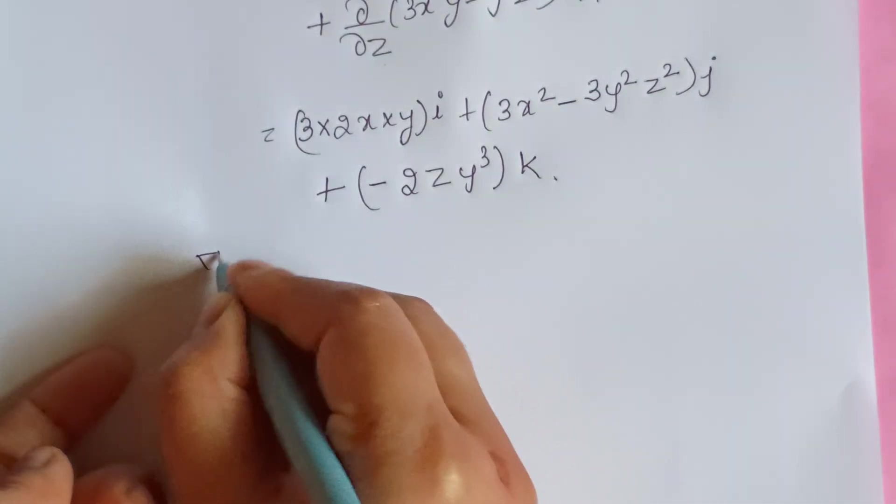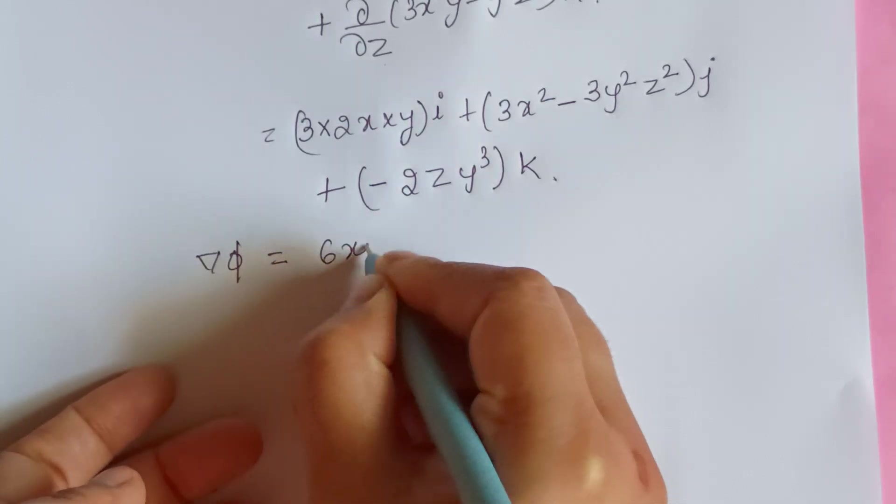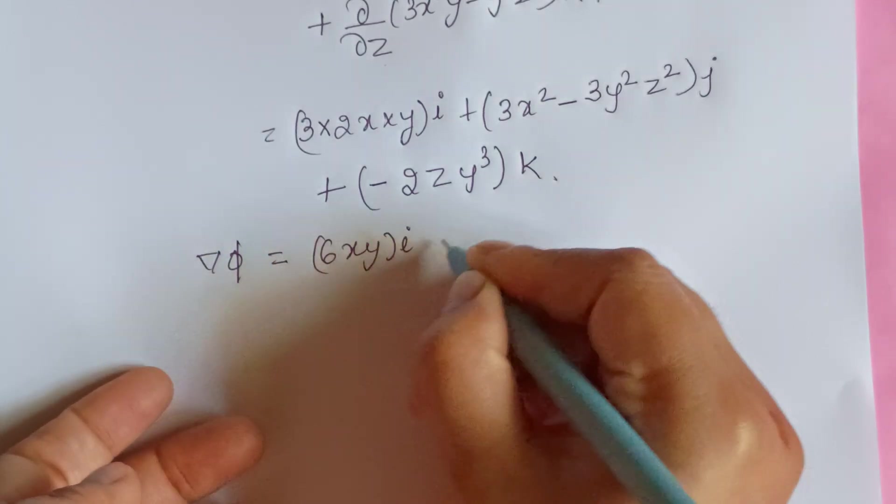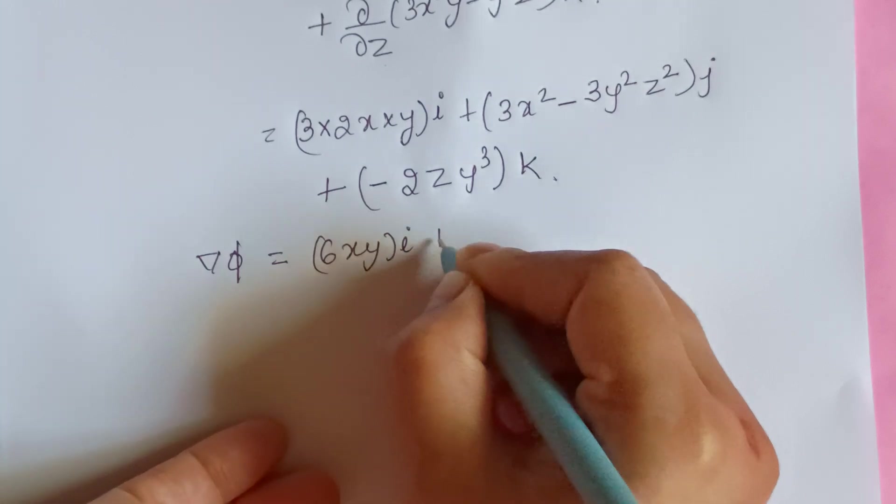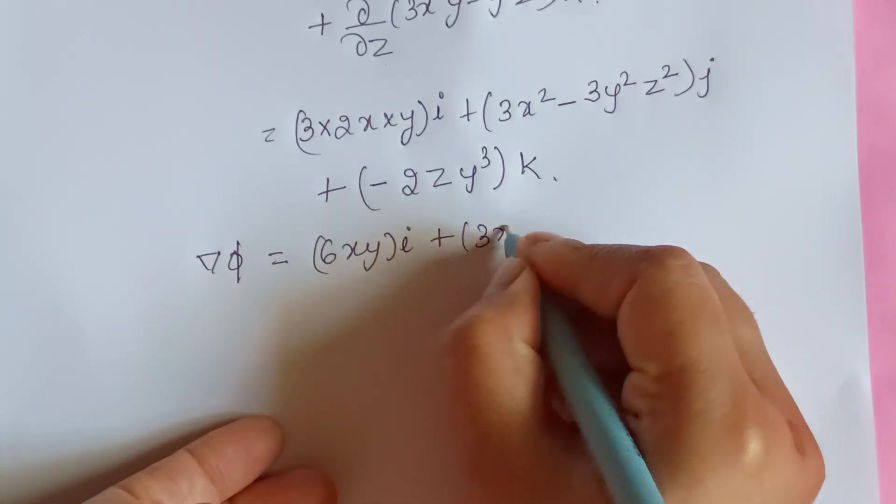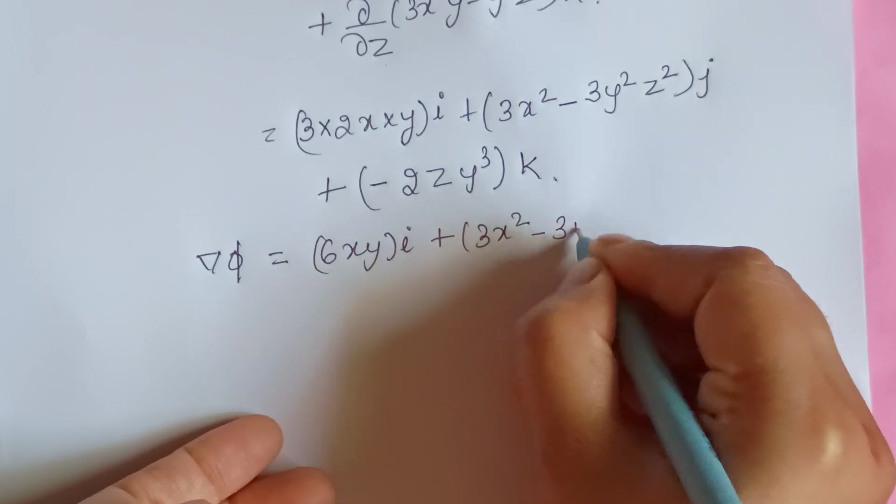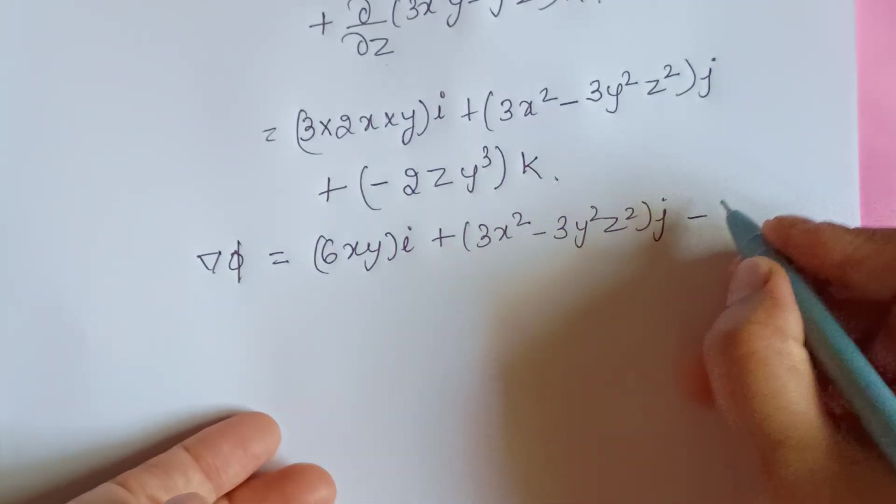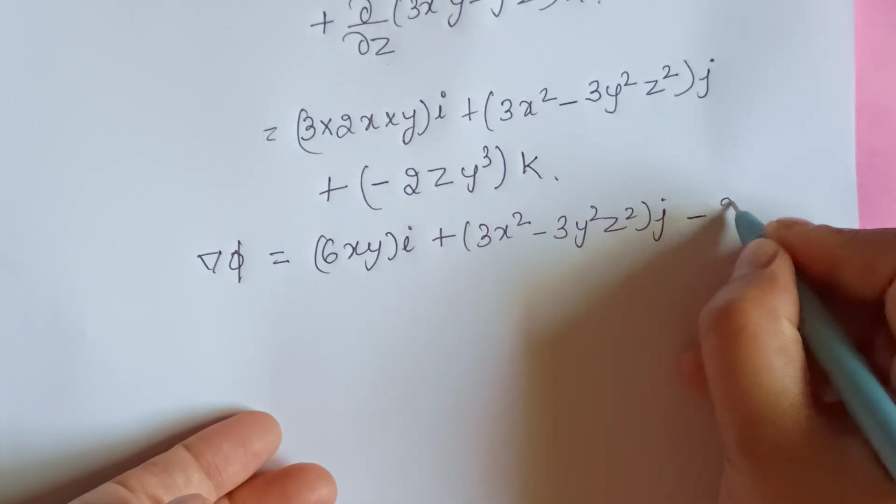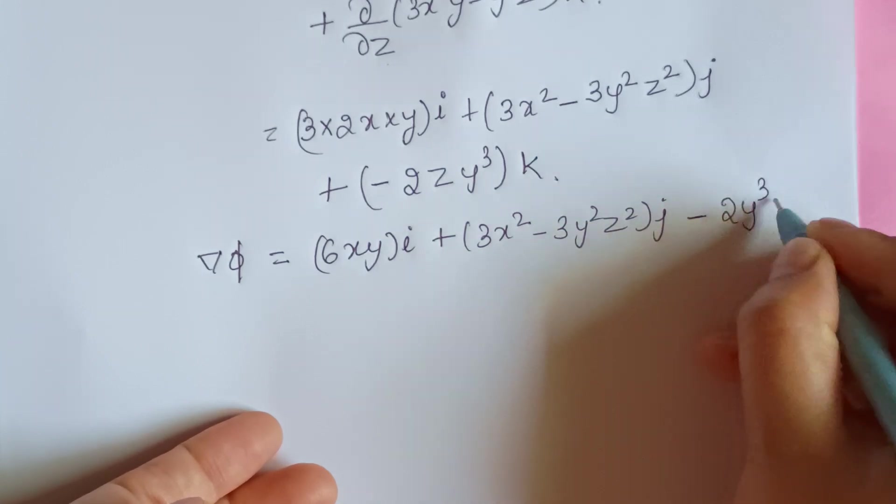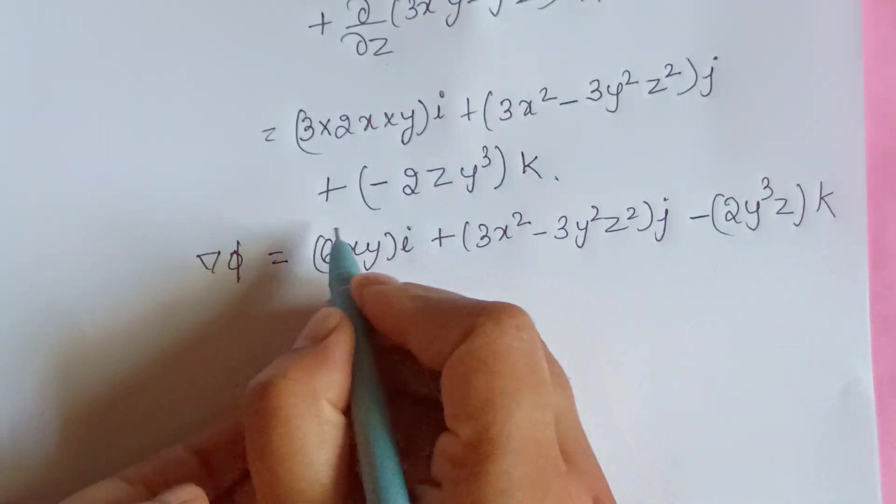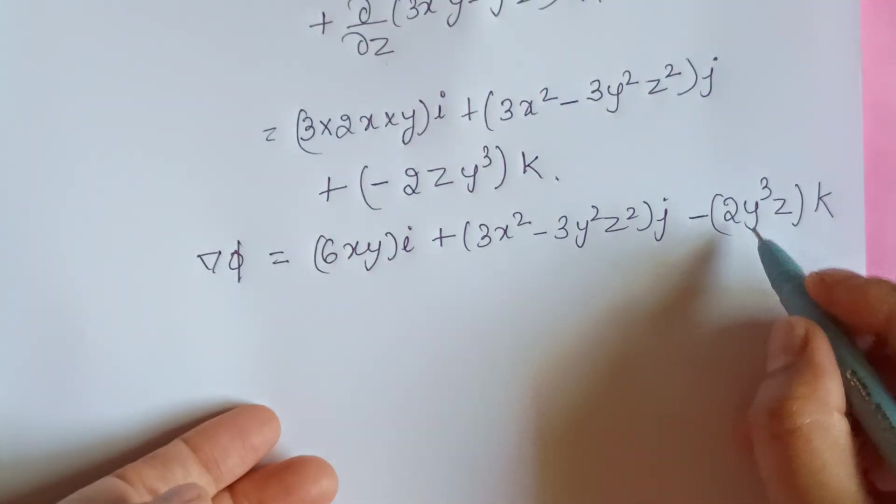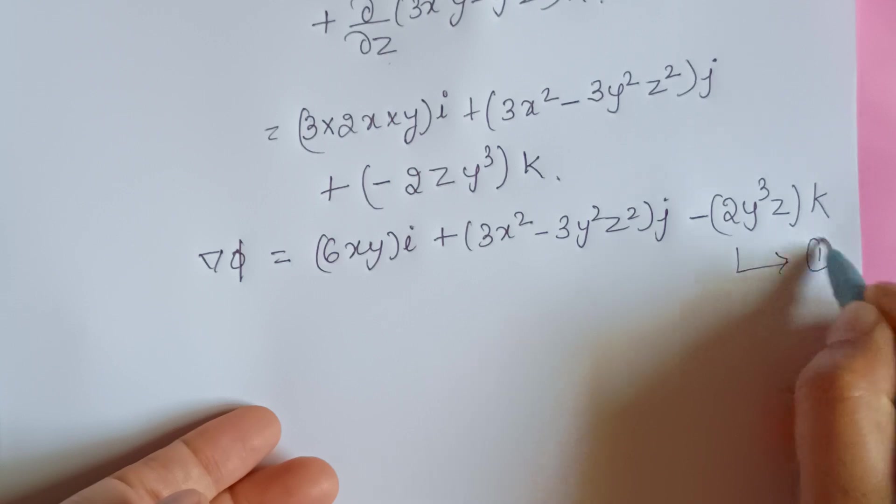So del phi equals 6xy i plus 3x² minus 3y²z² j minus 2y³z k. So let me consider this as equation 1.